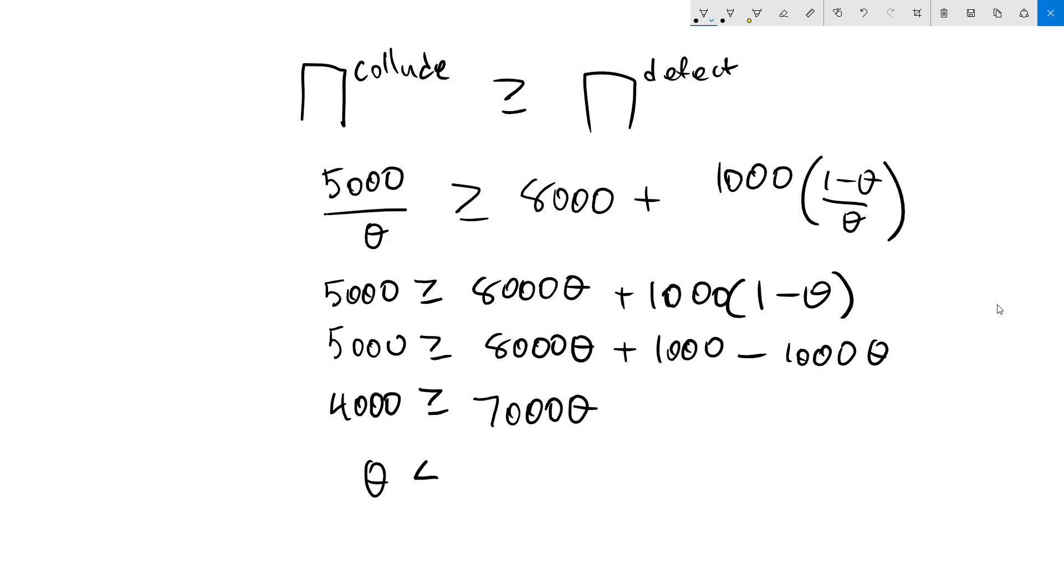We get theta less than or equal to 4 sevenths. It's only possible to collude if the chance of the game ending is less than 4 and 7, which is about 57%.